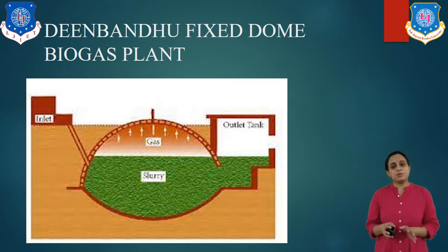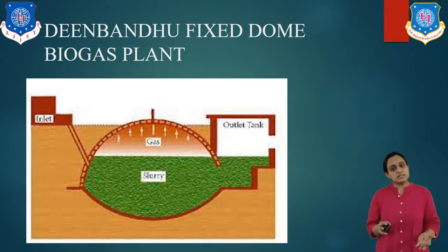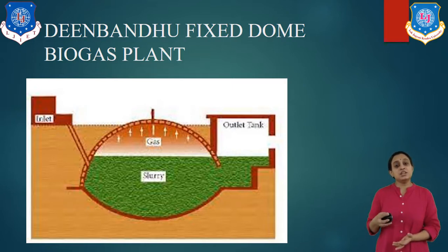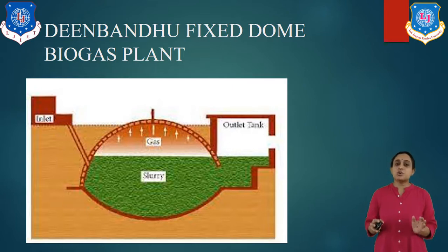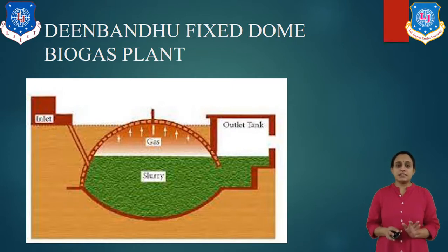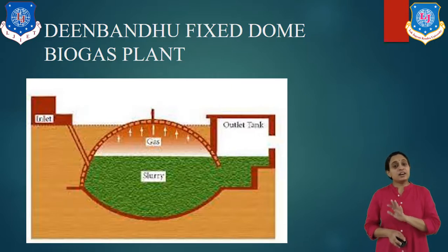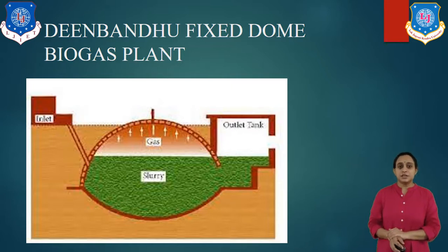This model is very popular, especially in rural areas, where the digester, inlet, and outlet tank are constructed as a single unit from brickwork masonry. The bottom of the digester is round, allowing slurry to circulate freely and produce gas continuously. The walls and bottom of this plant are sufficiently strong to bear heavy biomass loads. Efficiency of this plant is high, and a large number of Deenubandhu model biogas plants have been constructed in villages under government subsidy schemes.